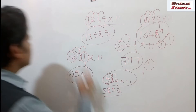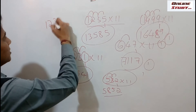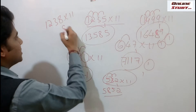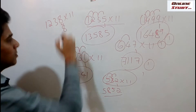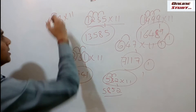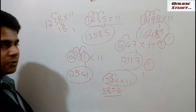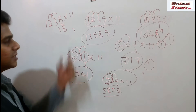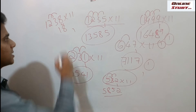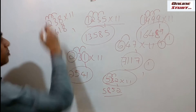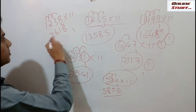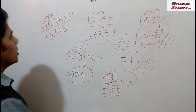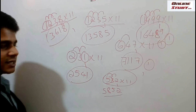We shall take another example: 1238 into 11. Place 8 as it is. Next step is 8 plus 3, that is 11 — 1 will be carried forward. Next step is 3 plus 2 is 5, and since we have a carry forward, 5 plus 1 is 6. Now 2 plus 1, that is 3. Now place 1 as it is. So the multiplication of 1238 into 11 is 13618.